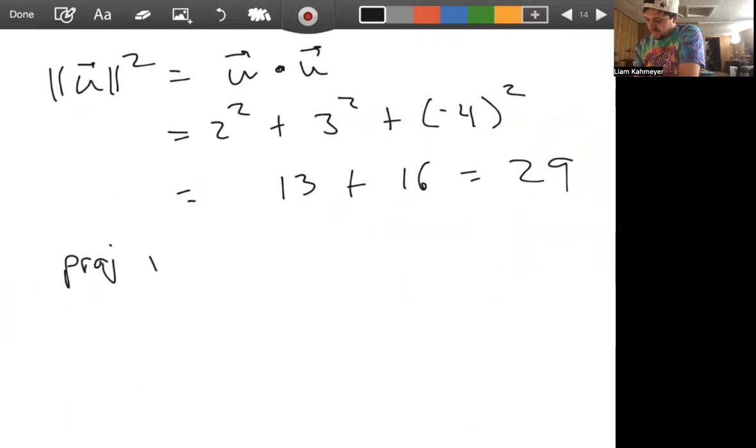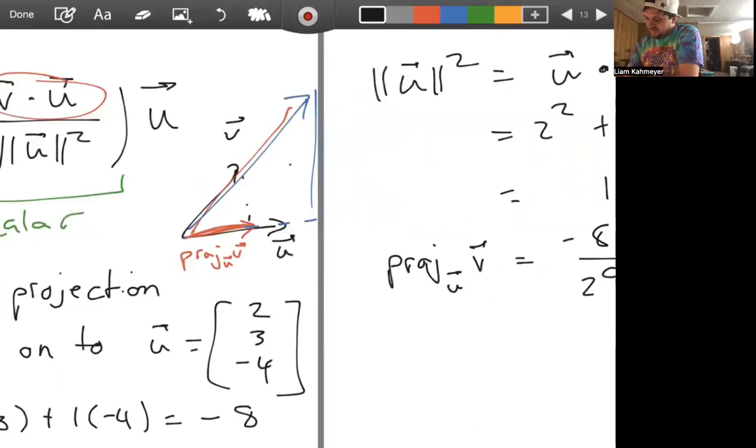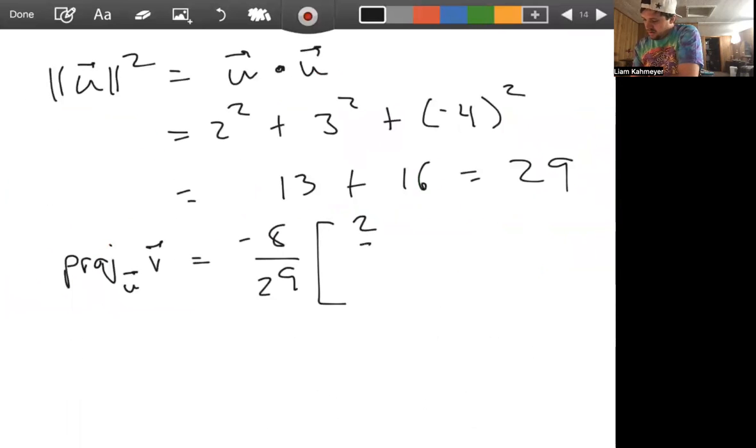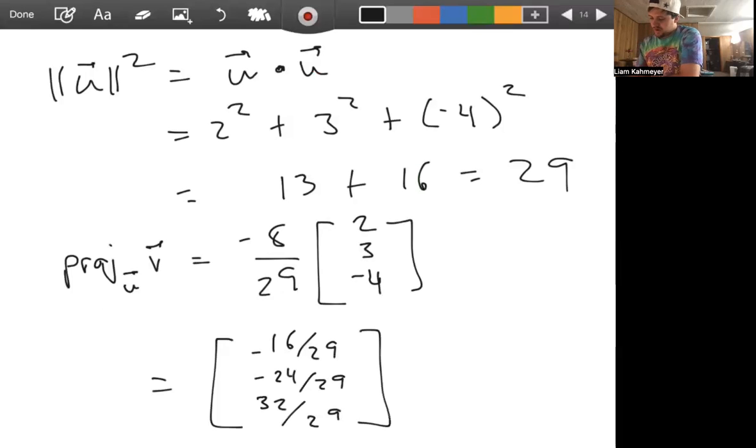So for our projection V onto U, the scalar out front looks like it's going to be negative 8 over 29, and then we're scaling the vector U, which is [2, 3, -4]. And so you can see our projection vector here would be [-16/29, -24/29, 32/29]. And so this would be your projection vector.